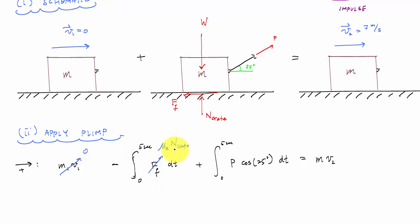Let's see, what numbers do I know? I don't know N crate. I know mu K. I know the mass I'm trying to solve for P and V2. V2 is seven meters per second. The mass I know, mu K I know, I'm looking for N crate.